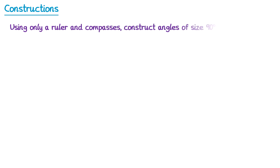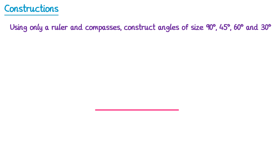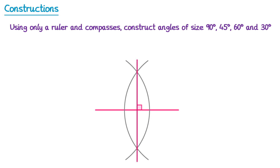One more thing you need to be able to do at GCSE is construct angles of particular sizes using only the ruler and pair of compasses. We need to do 90 degrees, 45 degrees, 60 degrees, and 30 degrees. Now you actually already know how to do 90 degrees, because we can just draw a perpendicular bisector like we did earlier. So if you're ever asked to draw a 90 degree angle, take a line and construct a perpendicular bisector like this — you then know you have a 90 degree angle.